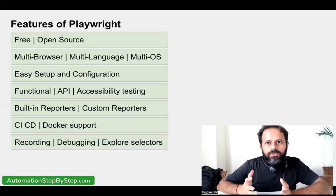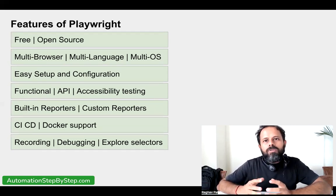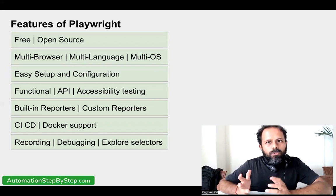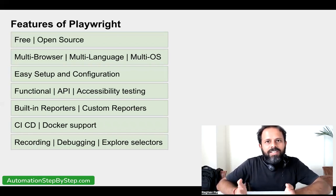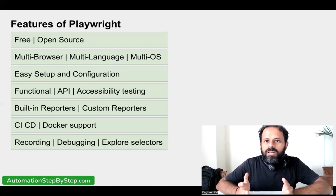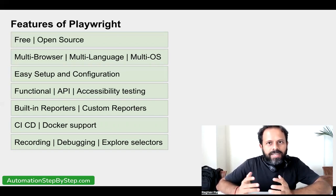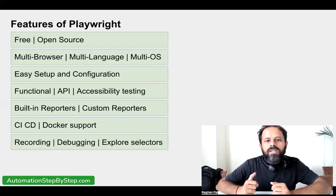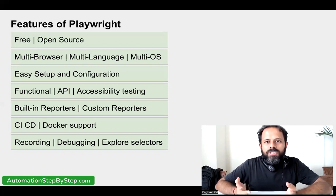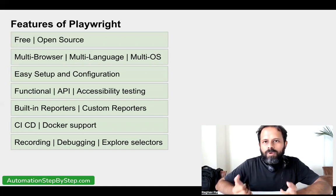Playwright has recording options — you can record your test and get test scripts generated automatically. You can also debug your tests with step-by-step debugging, which I will show in later sessions. Playwright also has options to capture object locators from the screen, so you do not have to manually create locators for your web objects; Playwright has options to explore and create locators for you.